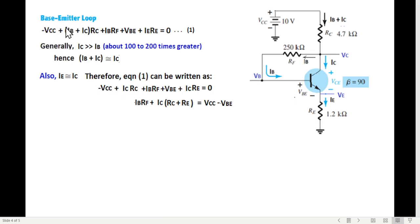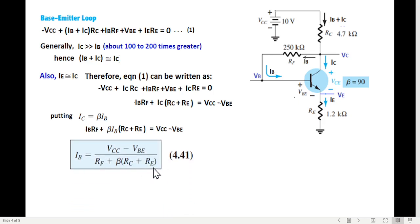So two changes here we'll make. So minus VCC. For IB+IC, we're writing IC. And then IB×RF remains same. VBE remains same. For IE, we're writing IC. So now we have IB terms and IC terms. Simplifying, we get this equation. Now we'll eliminate IC also. And we know the relation between IC and IB is, IC is beta times IB. So we replace IC by beta times IB. So IB×RF, β×IB, RC plus RE. And this side is VCC, VBE. And from here, we get this equation. And from here, we get this equation, which is 4.41. This is for IB current for this loop. Or for this type of a circuit.